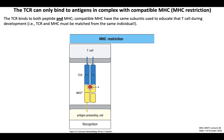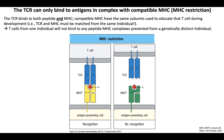Next, let's quickly cover MHC restriction. The T cell receptor binds to the complex of both foreign peptide and MHC. For reasons related to T cell development, the TCR can only bind to self-MHC molecules — the same exact MHC alleles used to educate that T cell during its development and selection. In other words, the TCR and MHC must be matched from the same individual, or at least from individuals with the same MHC haplotype expressing the same set of MHC alleles.